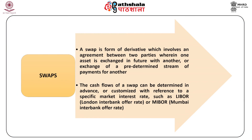A swap is a form of derivative which involves an agreement between two parties wherein one asset is exchanged in the future with another, or a predetermined stream of payments is exchanged for another. Swap contracts involve several future exchange cash flows. The cash flows of a swap can be determined in advance or customized with reference to a specific market interest rate such as LIBOR (London Interbank Offer Rate) or MIBOR (Mumbai Interbank Offer Rate). At the time of settlement, a difference is to be paid by the party who is obligated to pay more. There are two types of swaps: the interest rate swap and the currency swap.